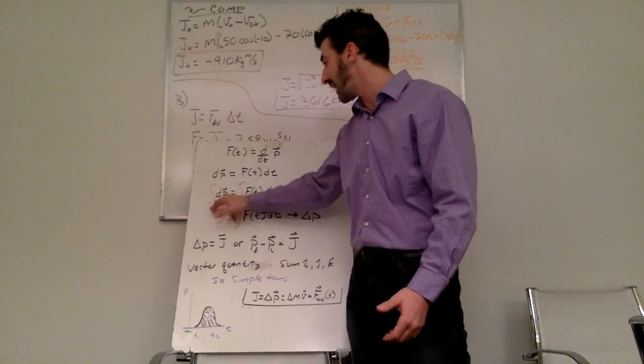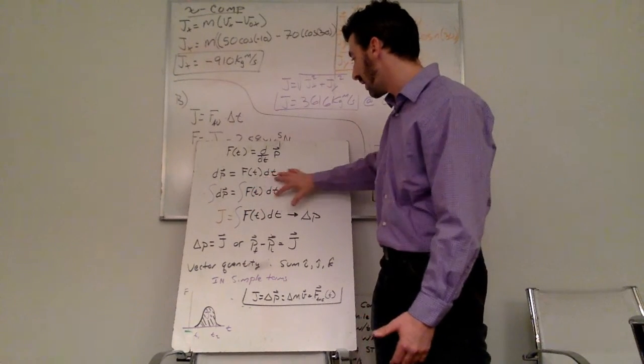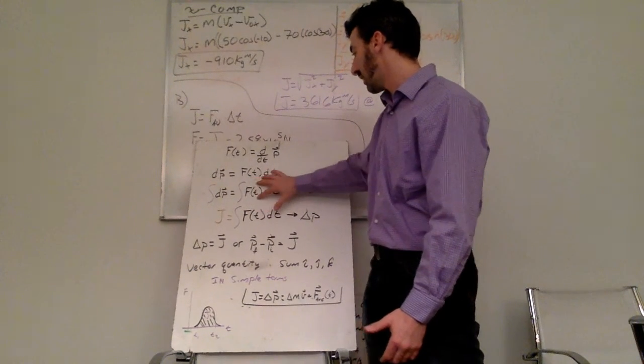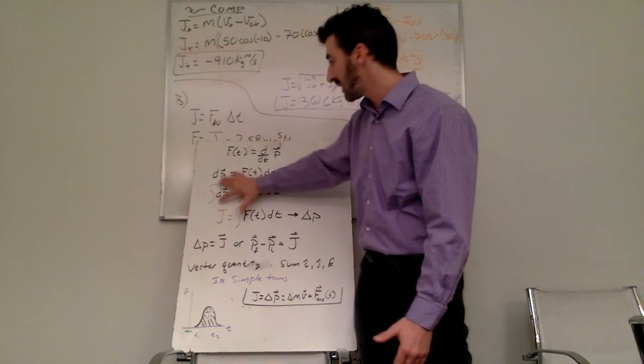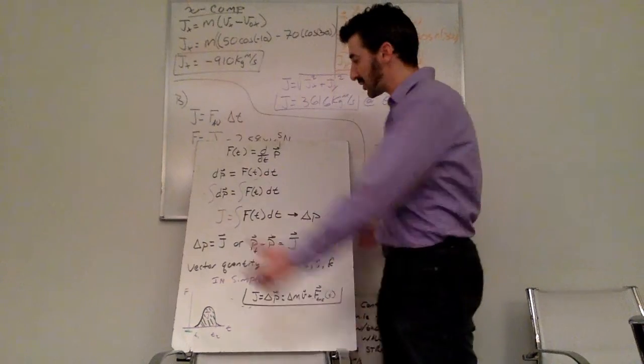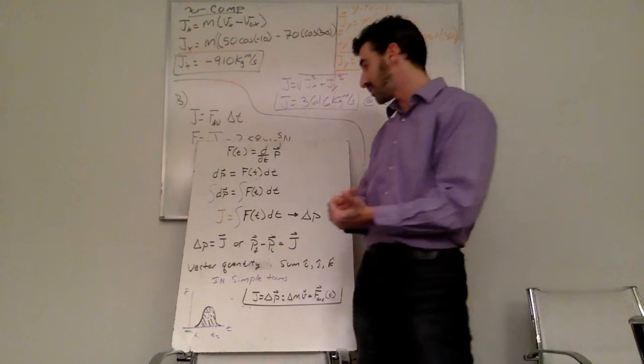So here I have my anti-derivative of momentum is my time rate and change of force, or rather the time dependent force. This change in momentum by definition, we're changing again, is something that's brought to us by the capital letter J.